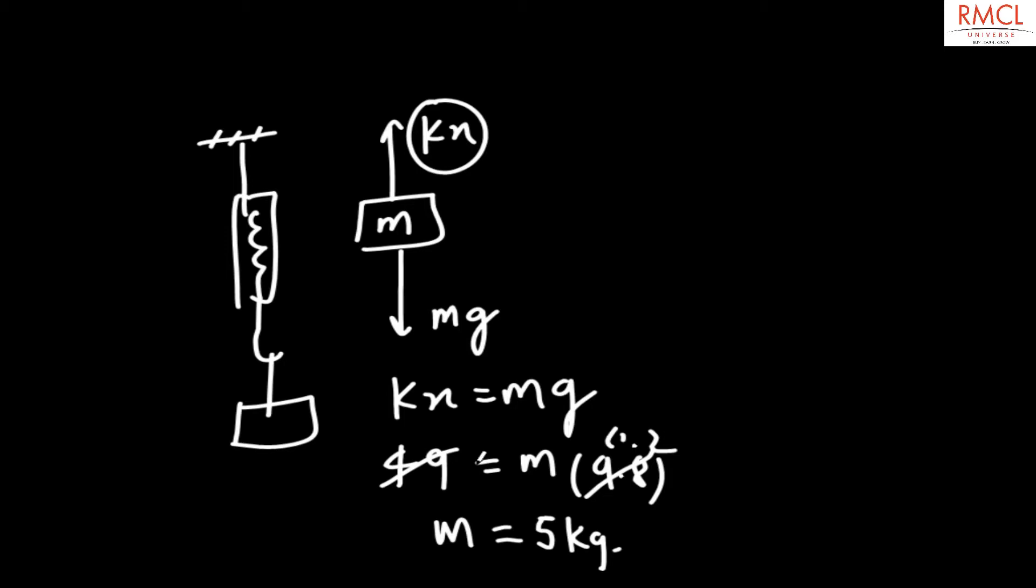Now, if this same system is being accelerated downward with an acceleration of 5 meter per second square, the FBD would be the same, but now in this case there would be additional acceleration in the downward direction. Our equation would be like mg minus kx must be equal to mass times acceleration.